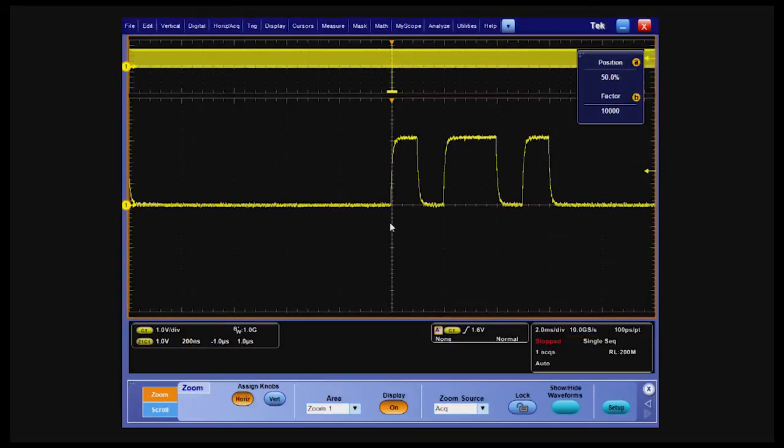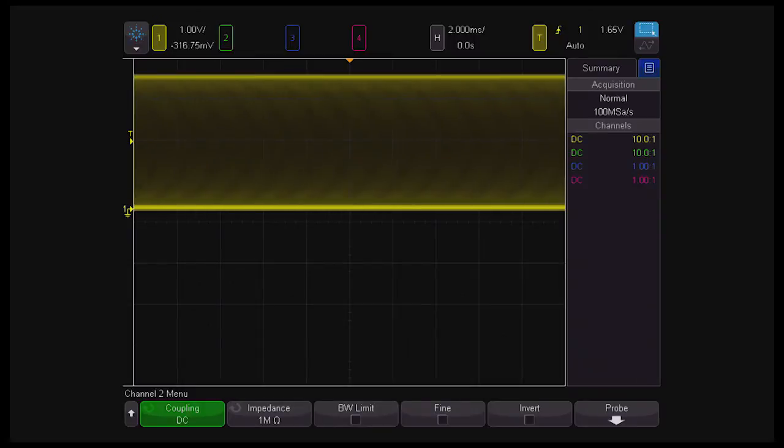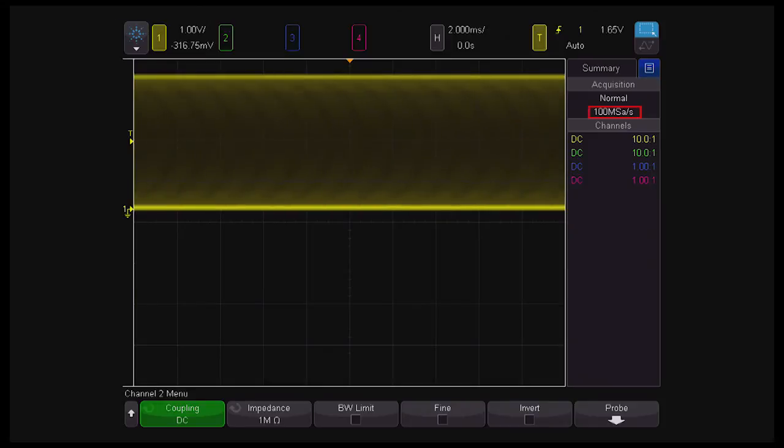The Agilent X4000A series has a maximum sample rate of 2.5 Giga samples per second, but you are limited to 200 MPs when acquiring a single acquisition at 2 ms per division. In run mode, you can see that it is limited to 100 MPs. The record length has automatically been set and cannot be adjusted.